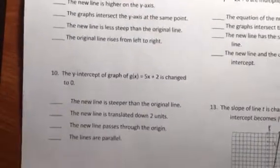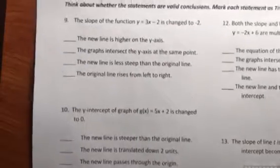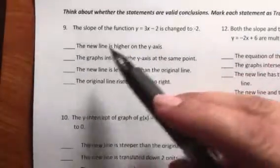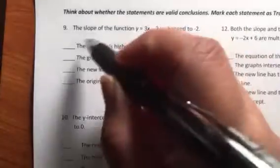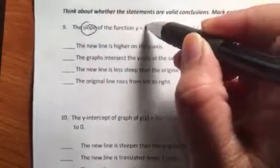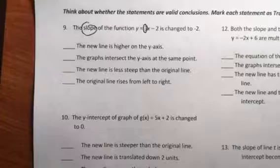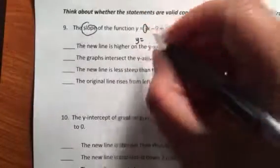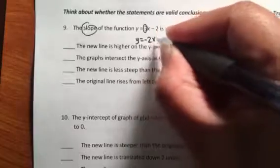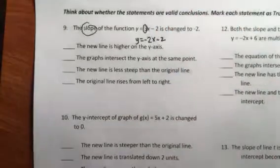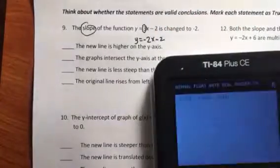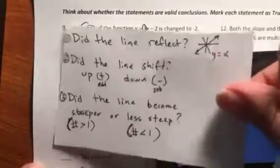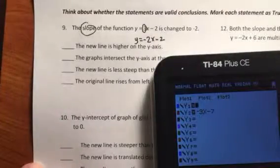So on the back. So let's look at number 9 very quickly. So we're changing the slope. So the slope is currently 3. And we're going to change it to negative 2. So our new equation is going to be y equals negative 2x minus 2. So again, you can either know your questions or you can just put it in the calculator.